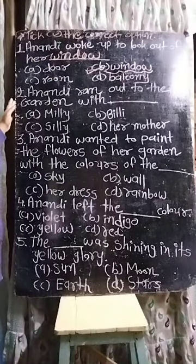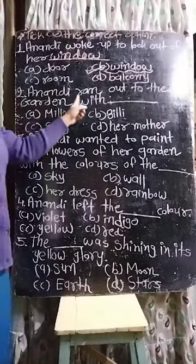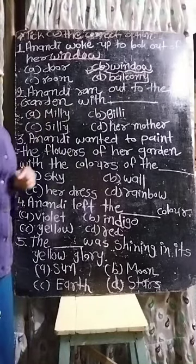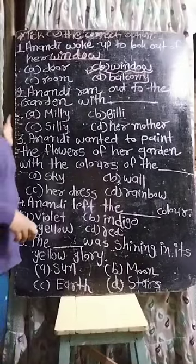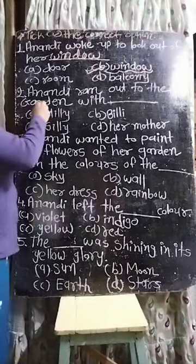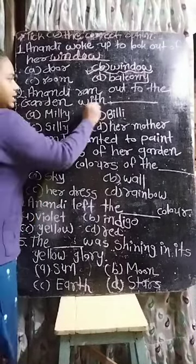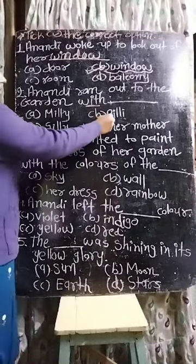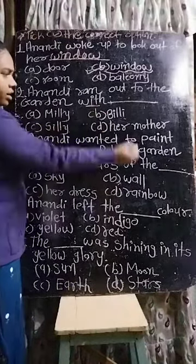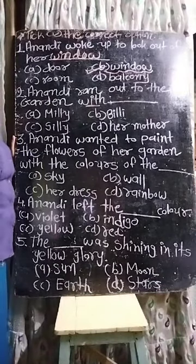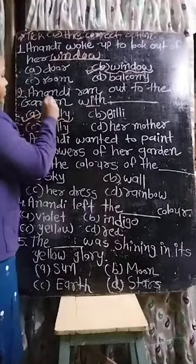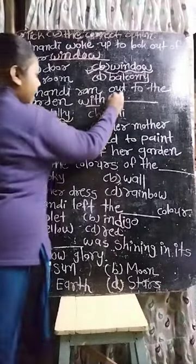Second one: Anandi ran out to the garden with — Anandi daud kar garden mein aayi, kis ke saath? Milly, Billy, Silly, or her mother? The answer is Milly. Woh Milly ke saath bhaag kar baahar aa gayi.